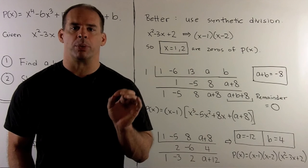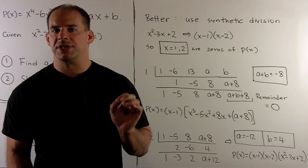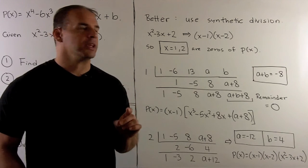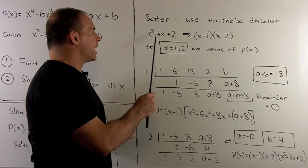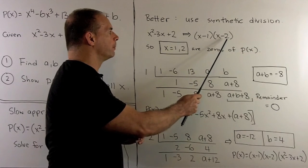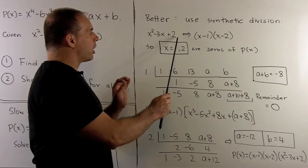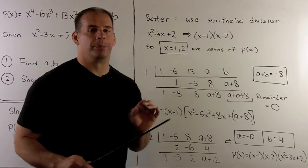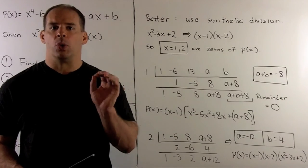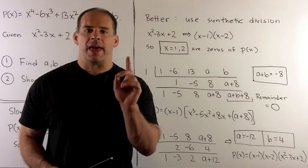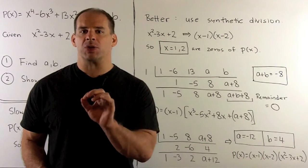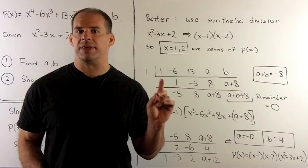Our second approach is the best approach, but it requires that we have synthetic division in our toolbox. Now, if we factor X squared minus 3X plus 2, I get X minus 1 times X minus 2. So the zeros of our quadratic are 1 and 2. Because our quadratic divides P of X, 1 and 2 will also be zeros. That means I can break down our polynomial by dividing by X minus 1 and X minus 2 using synthetic division.